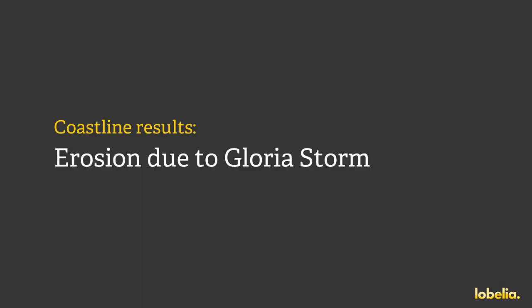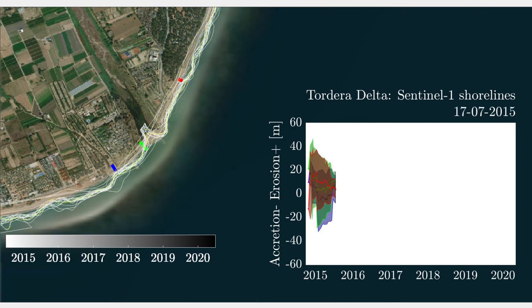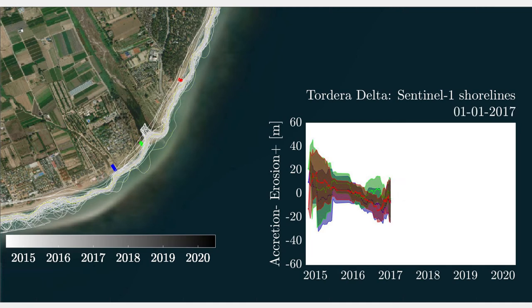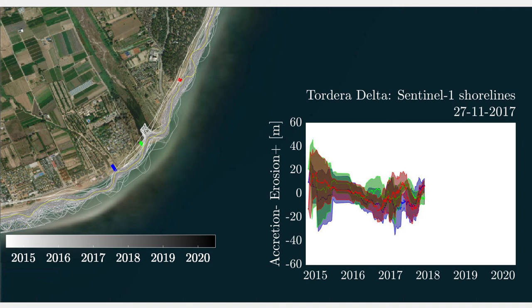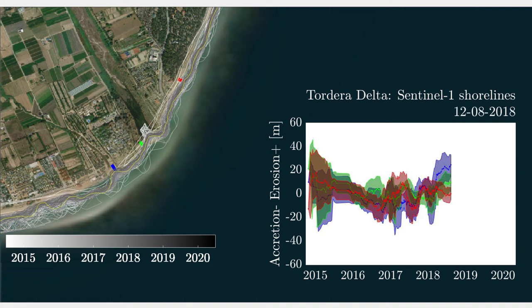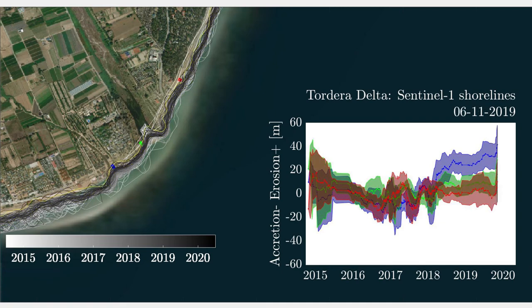Waterlines have been computed from all available Sentinel-1 imagery in the Tordera Delta in Spain between 2015 and 2020. As time goes, the detected waterline gets closer and closer to the land, shown white to black. This observation advocates for a strong erosion of the coast in this area.